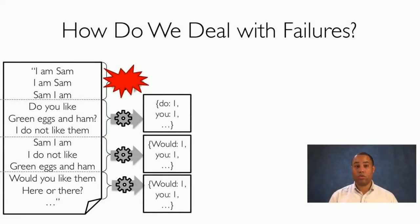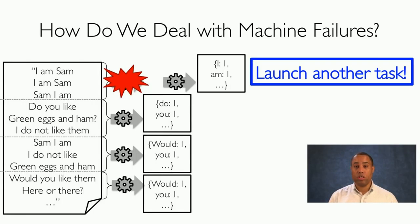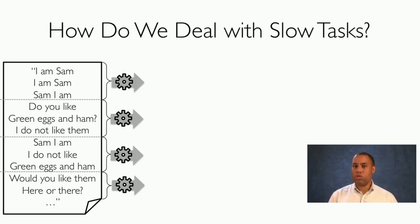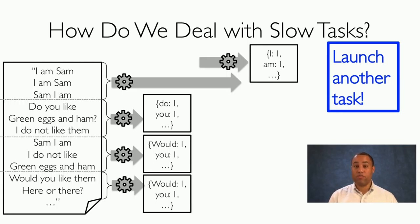How do we deal with failures? If the first machine has failed, the simplest solution is to just launch another task — either on that machine if it's recovered, or on another machine. How do we deal with slow tasks? If all other tasks finish quickly but the task on machine one hasn't finished yet, we simply launch another task and kill that original task. We can launch it on a different machine, because maybe that first machine was about to fail and so it's running very slowly.